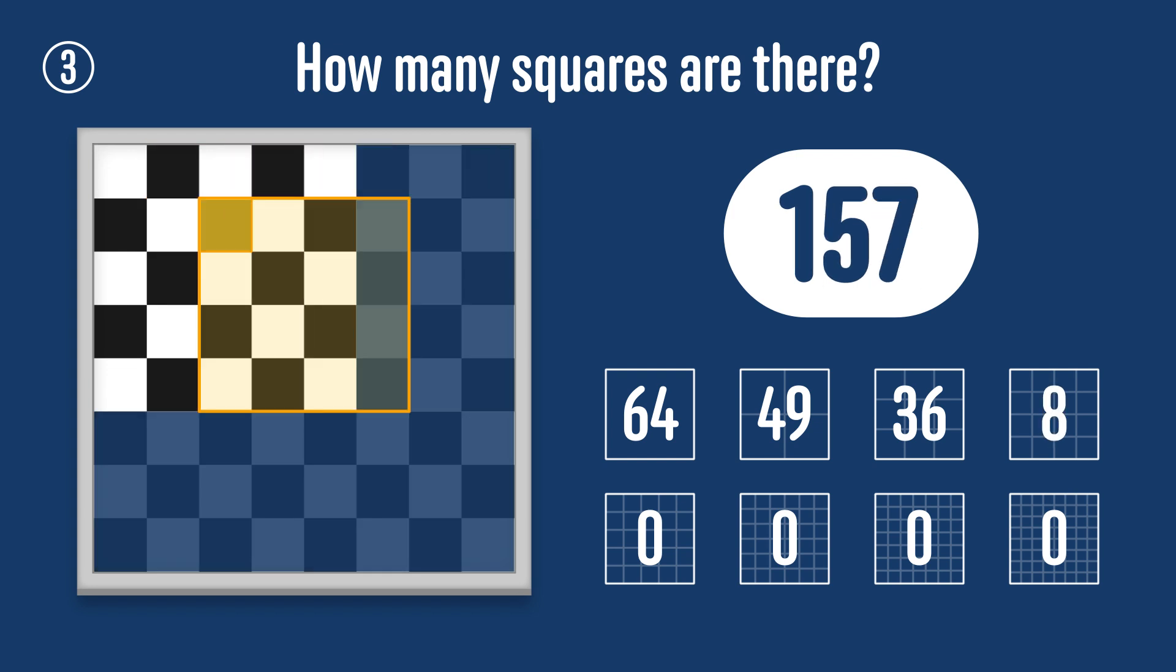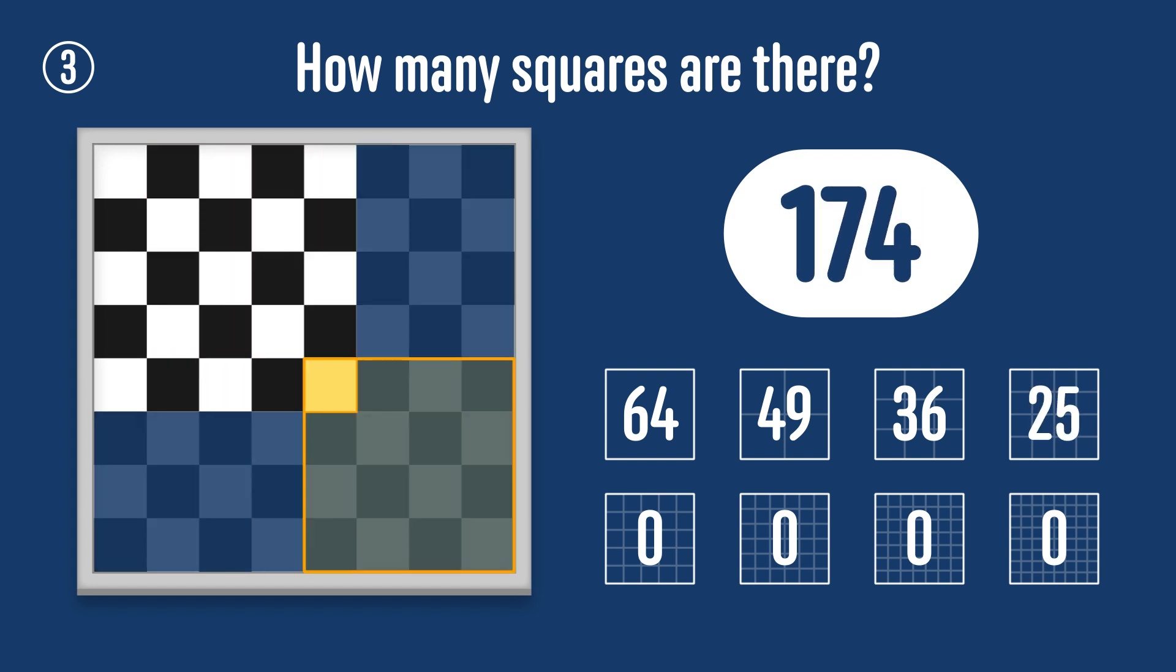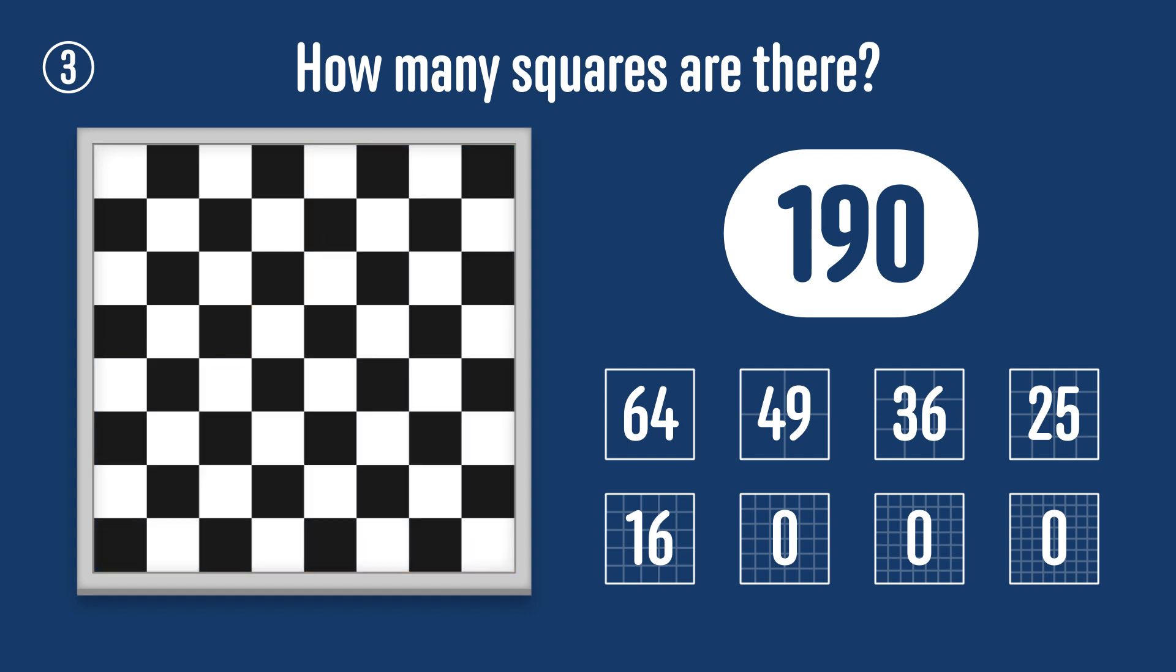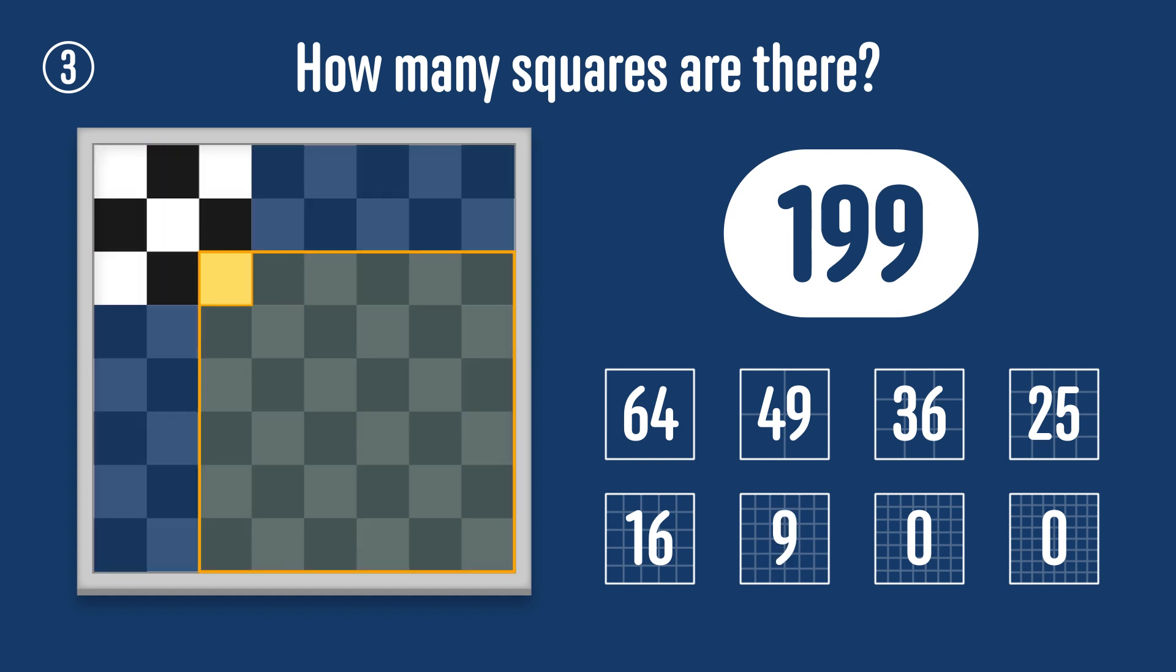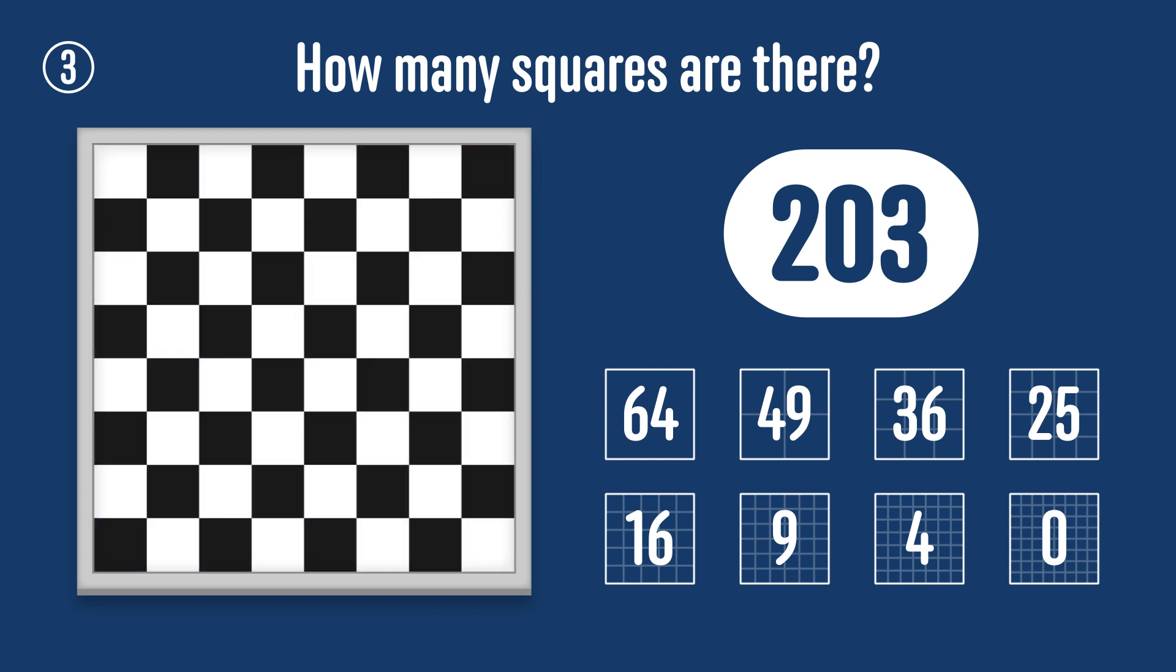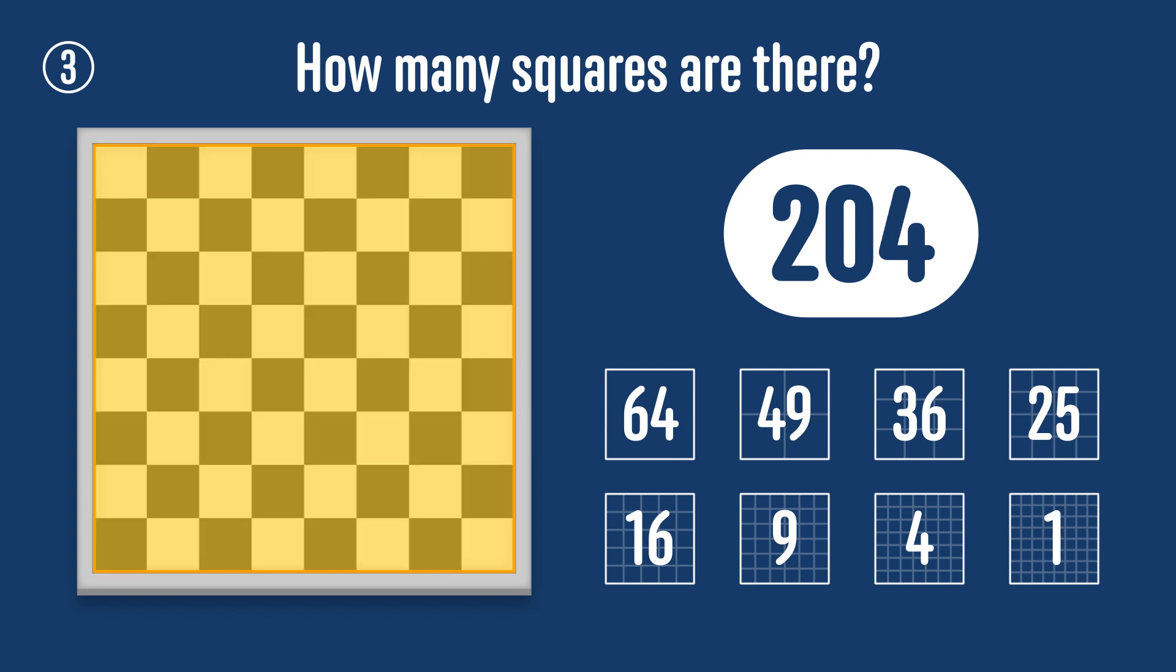The same logic tells us there are five times five or 25 ways to place a four by four square, four times four or 16 ways to place a five by five square, three times three or nine ways to place a six by six square, two times two or four ways to place a seven by seven square, and finally just one way to place the eight by eight square which corresponds to the entire board.